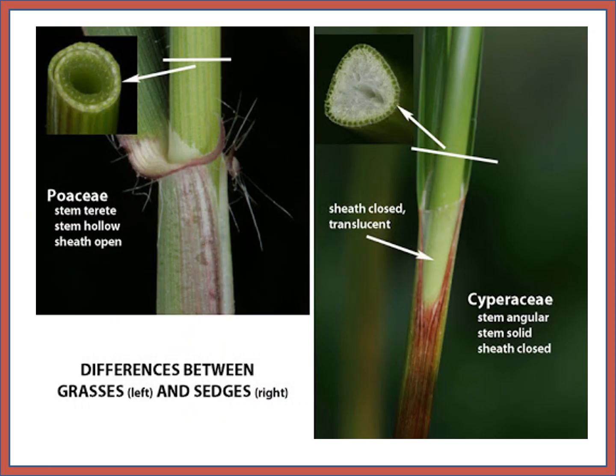Difference between grasses and sedges: in Poaceae the stem is terete, stem mostly hollow, and sheath open. For Cyperaceae the stem is angular, stem solid, and sheath closed.